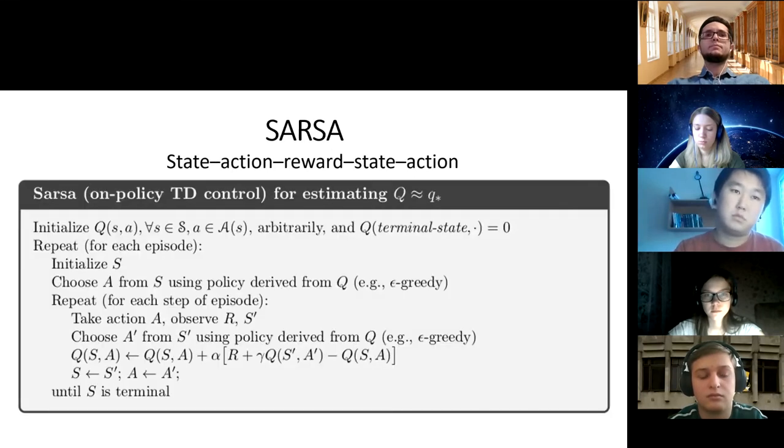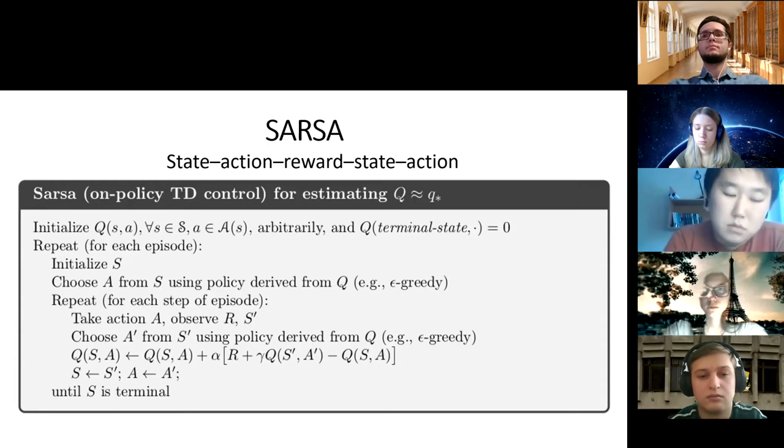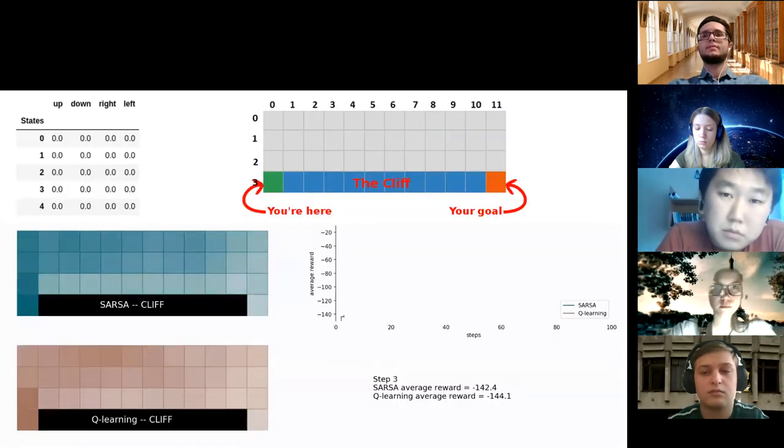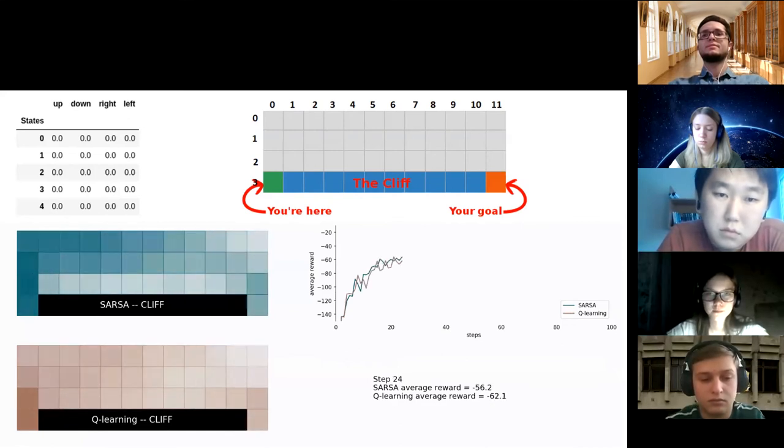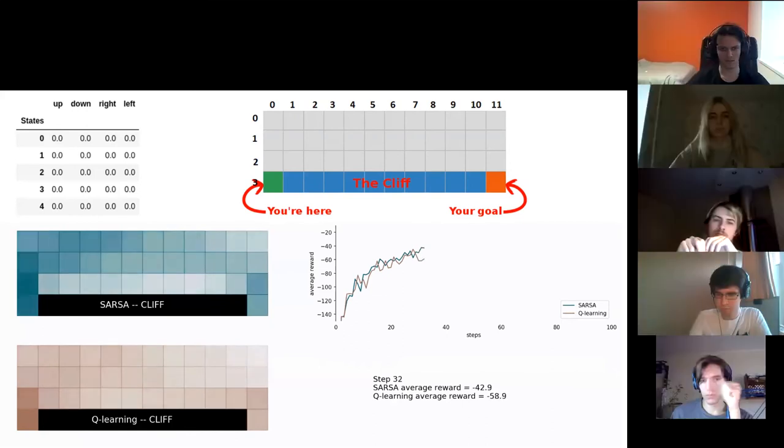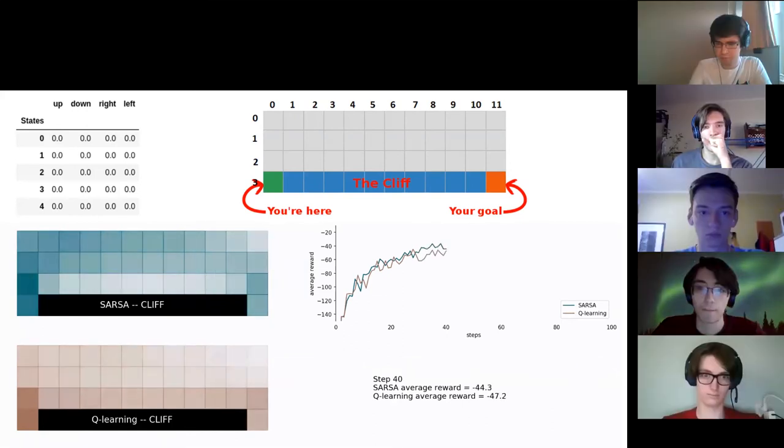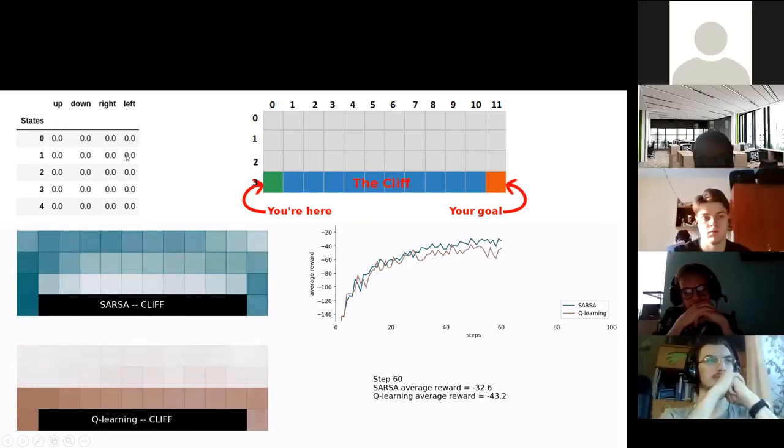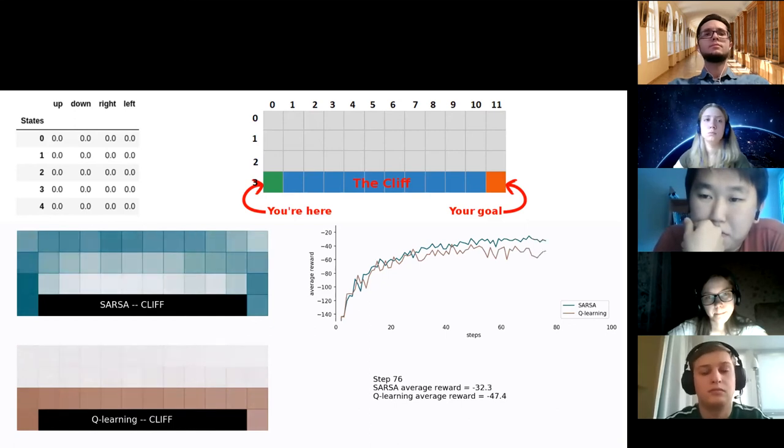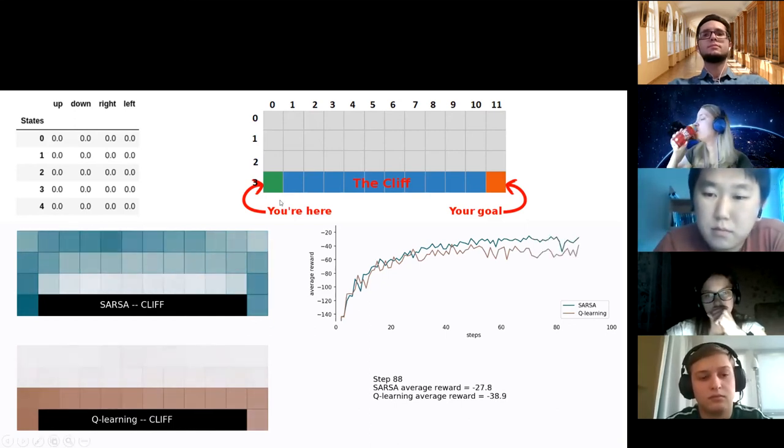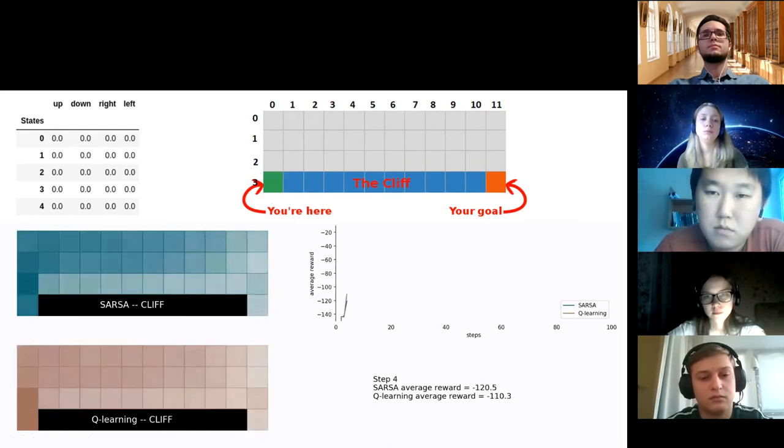Let's look at a small popular example, the cliff walking problem, to understand this algorithm. Initially we have a new Q value table. As the training process proceeds, the agent will fill it out. We need to get to the opposite side without falling off the cliff. If the agent falls off the cliff, they lose 100 points.